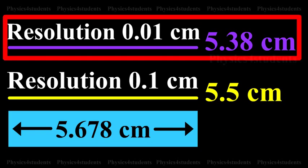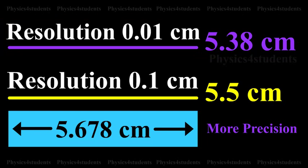On the contrary, the second measurement is less accurate but more precise.